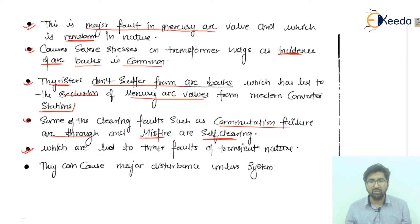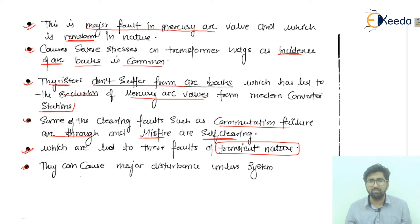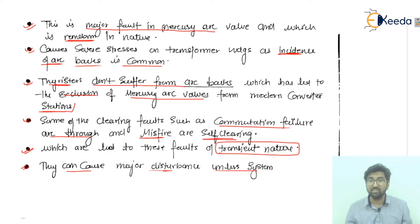These faults — commutation failure, arc through, and misfire — are self-clearing and are therefore considered transient in nature. However, they can cause major disturbance in the system. That covers all the related topics, and I hope you have understood all the points listed here. Thank you and goodbye.